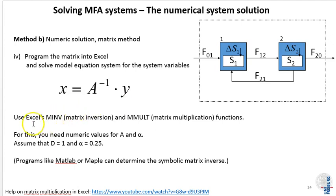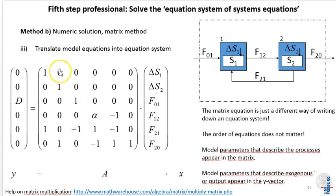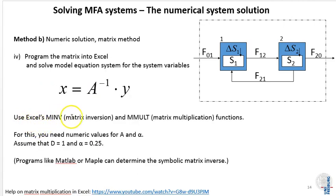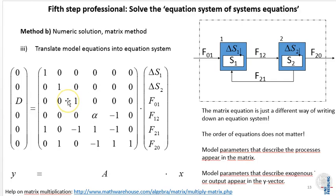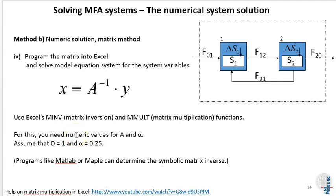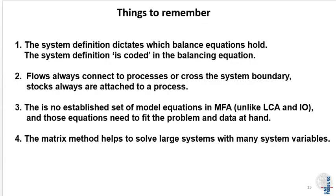You can do this, for example, in Excel using Excel's M-inverse functions and M-mult functions for matrix multiplication. You can put in the numbers for alpha and D, program it into Excel, and then use those functions to directly generate the result. You can also use programs like MATLAB or MAPLE, or to some extent Python, to make a symbolic inverse of matrix A and get the actual matrix inverse in terms of the symbols D and alpha. Here I give you the advice of trying to make this matrix inversion in Excel using these two functions.